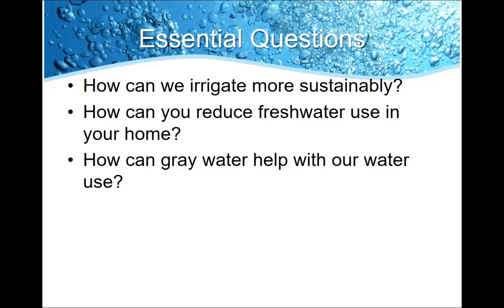So number one: how can we irrigate more sustainably? Number two: how can you reduce freshwater use in your home? Number three: how can gray water help with our water use? Now, we've talked since the very first unit about the idea of trade-offs — there are going to be advantages and disadvantages to a lot of the decisions we as humans have to make with respect to our natural resources. And water is no different.